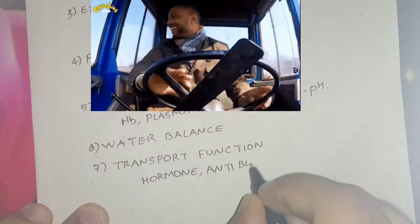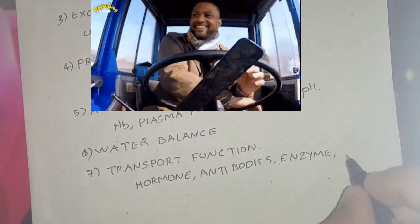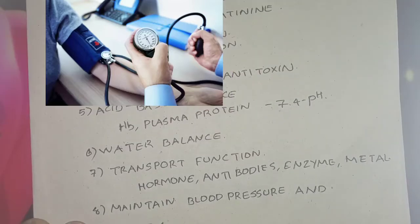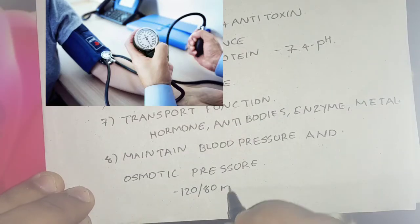Now for the transport function, blood acts as a vehicle which transports hormones, antibodies, enzymes, metals, etc. to target tissue. Next is the maintenance of blood pressure and osmotic pressure. Blood maintains BP at 120/80 by various mechanisms and plasma proteins are responsible for maintaining osmotic pressure constant.